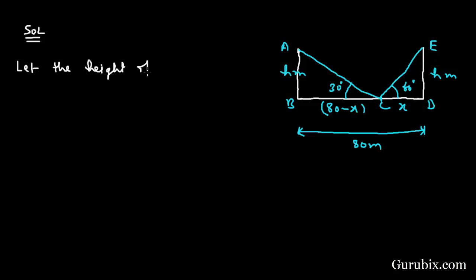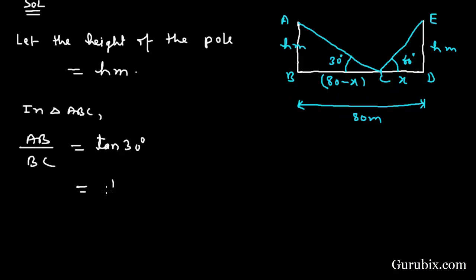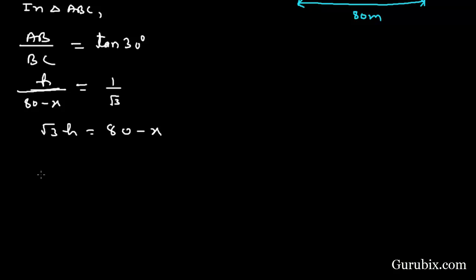Let the height of the pole equal h meters. Now we shall move to triangle ABC. In triangle ABC, we shall find the ratio of AB to BC, and this ratio is tan theta where theta is 30 degrees. So tan 30 equals 1 over square root of 3. AB is h and BC is 80 minus x. Therefore, square root of 3 times h equals 80 minus x. This means x equals 80 minus square root of 3 times h. This is our equation number 1.